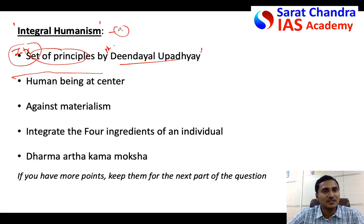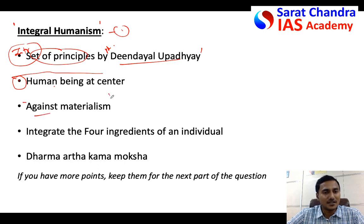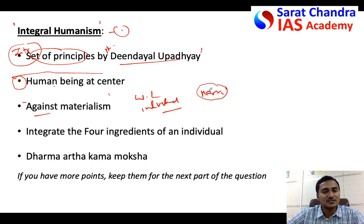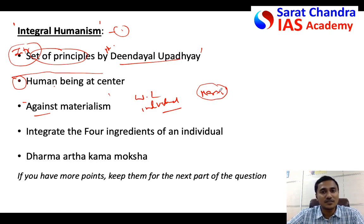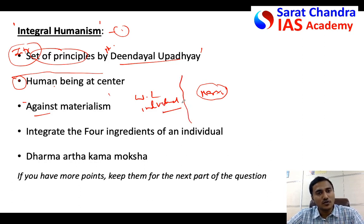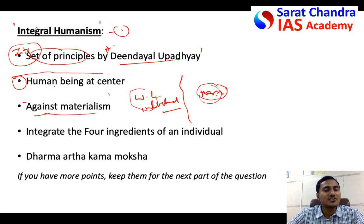Integral humanism is not a single line — it is a set of concepts. You write multiple points. For example, one thing it talks about is that the human being should be at the center of overall development of a nation, not wealth but the human being. It is against materialism. Western liberalism talks about individualism, whereas Marxism states there is no place for individualism. Integral humanism is a median between these two — it does not accept Western liberalism nor does it accept Marxism, because both are materialistic.